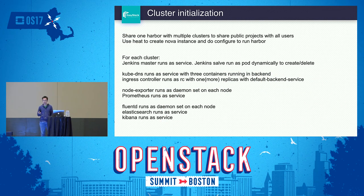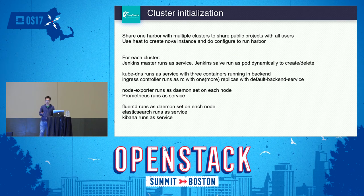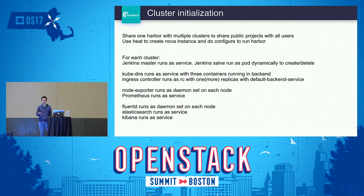This is the initialization process. We share one Harbor among different clusters. We use Heat to create a Nova instance and do some configuration to run Harbor — that means Harbor runs on a VM. For each cluster, Jenkins runs as a service, and Jenkins slaves run as pods dynamically. Kubernetes, Prometheus, and EFK are also initialized. The NodeExporter for Prometheus runs as a DaemonSet on each node, Fluentd also runs as a DaemonSet, and the other components run as Kubernetes services.